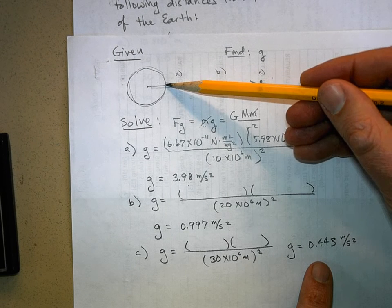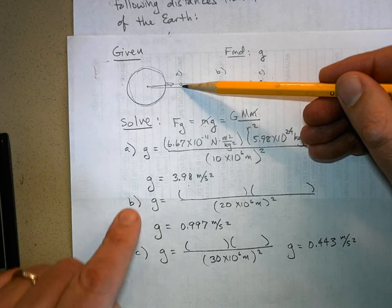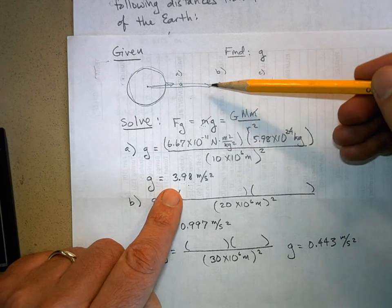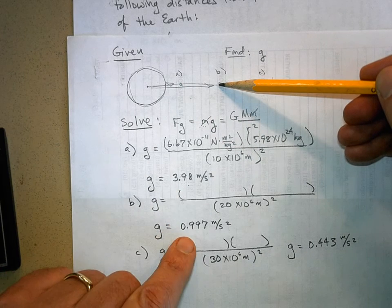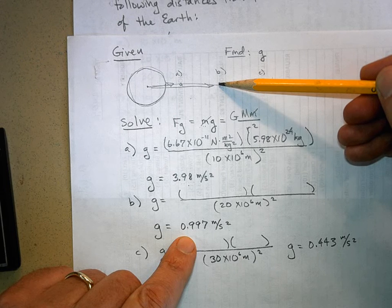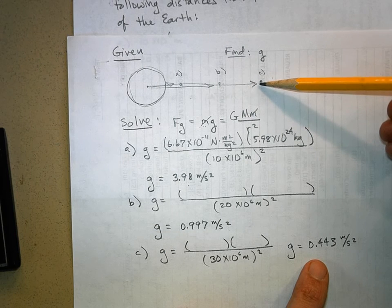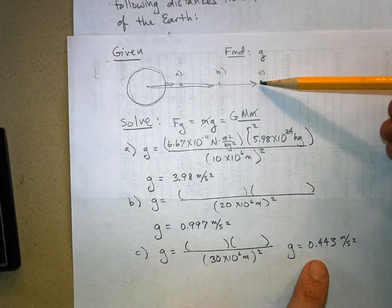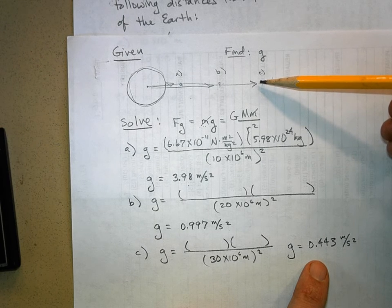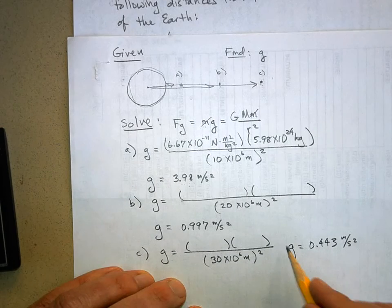We start off with 9.8, get a little bit above the Earth it's 3.98, now it's just a little less than one, and then a little less than half a meter per second squared. So it's dropping dramatically.